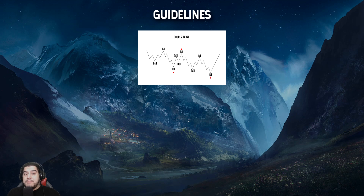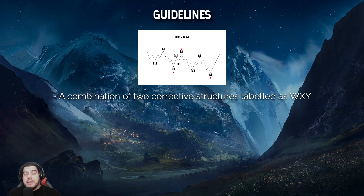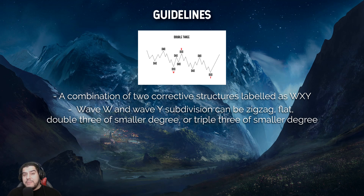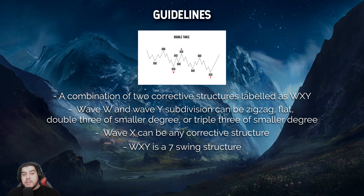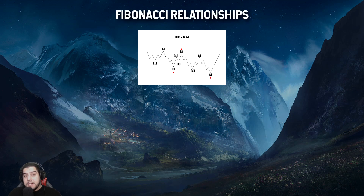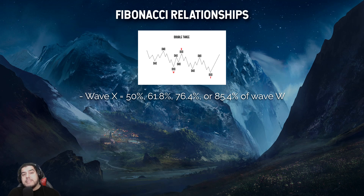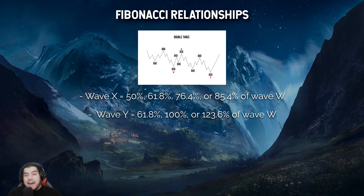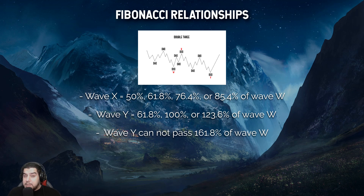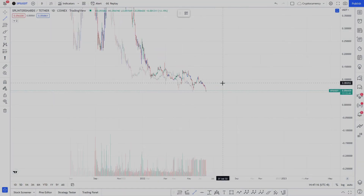Let's go over the guidelines of this corrective pattern. We have a combination of two corrective structures labeled as W, X, Y. Wave W and wave Y subdivisions can be a zigzag, flat, double three of a smaller degree, or triple three of a smaller degree. Wave X can be any corrective structure, and the total WXY structure is a seven-wave swing movement. It's also important to understand the Fibonacci ratio relationships: wave X will be 50%, 61.8%, 76.4%, or 85.4% of wave W. Wave Y will usually be 61.8%, 100%, or 123.6% of wave W. Wave Y cannot surpass 161.6% of wave W, otherwise this could be an impulsive move and a five-wave structure.